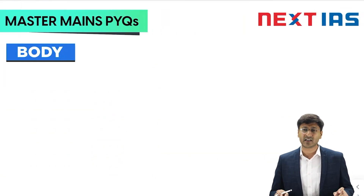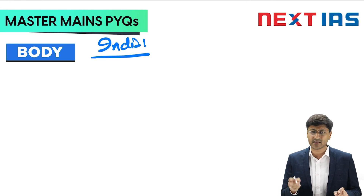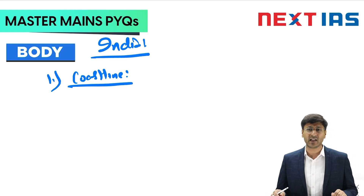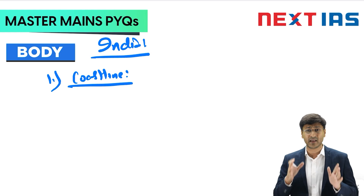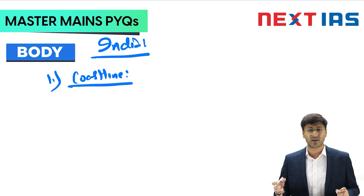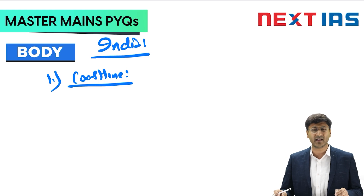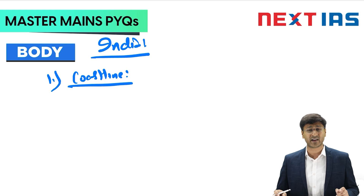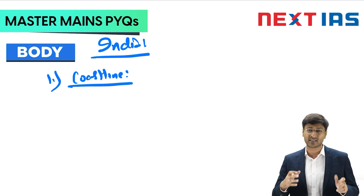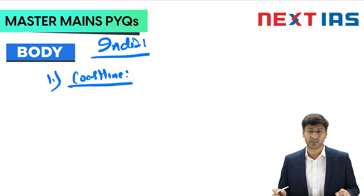Regarding why oil pollution is particularly harmful for India: first, India has a huge 7,500 km-long coastline, making it very prone to oil spills from coastal industries and tanker accidents. The 2010 Mumbai oil spill badly affected marine flora. Additionally, 12 major ports and 200+ minor ports handle 95% of India's international trade by volume and about 68% by value, with the majority being oil trade.